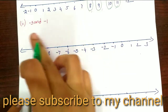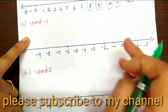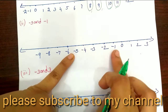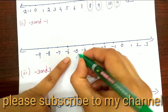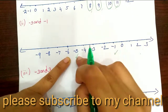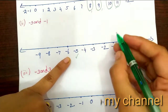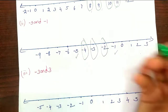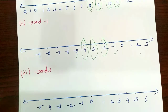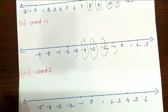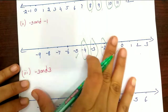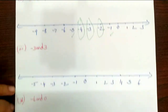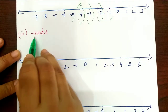The integers lying between 7 and 12 are 8, 9, 10, 11. Next, between minus 3 and 3.